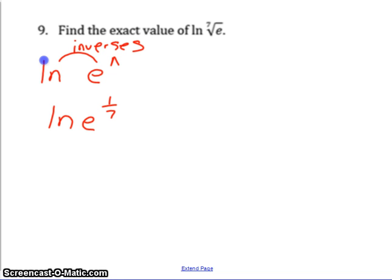The index of the root is the denominator of the rational exponent. So now that I've got it written that way, natural log and E undo each other, and whatever is in the power is the answer. So I've got 1/7, that's the answer.